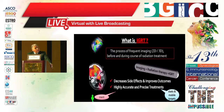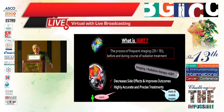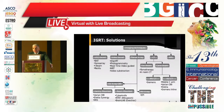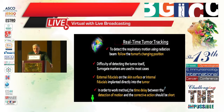What is IGRT and why do we need it? IGRT is the process of frequent imaging — 2D or 3D — before and during the course of radiation treatment to decrease side effects and improve outcomes. It should be highly accurate and can lead to precise treatment achievement. Imaging techniques that can aid include ultrasound-guided, video-based, planar X-ray, fan-beam CT, cone-beam CT, or MRI real-time tumor tracking.